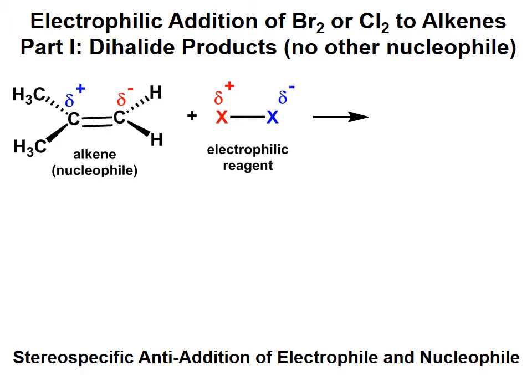There are two parts to the addition of Br2 or Cl2 to alkenes. In the first part, we're going to get dihalide products. If the electrophilic reagent is Br2, there's nothing else that's going to add as the nucleophile. One Br atom will add as the electrophile and the other Br atom will add as the nucleophile, so you're going to get Br and Br added to the sp2 carbons of the alkene.